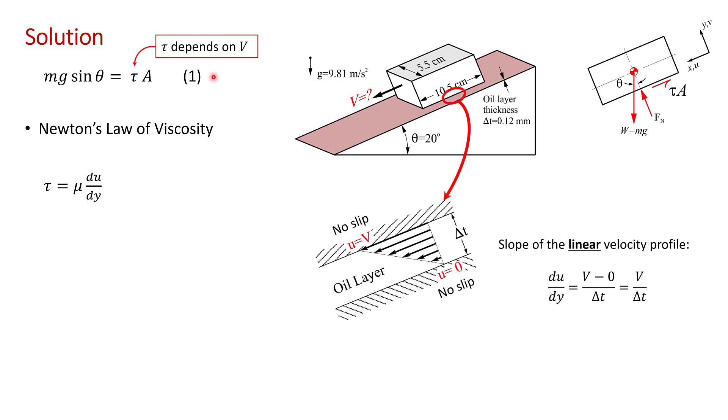Here I've drawn a sketch of the velocity distribution in the oil beneath the block. Recall that the oil sticks to both the block and the plane. That's because we have a no-slip condition at both surfaces. So the oil is stationary at the surface of the inclined plane, and similarly the oil has the same speed as the block at the surface of the block.